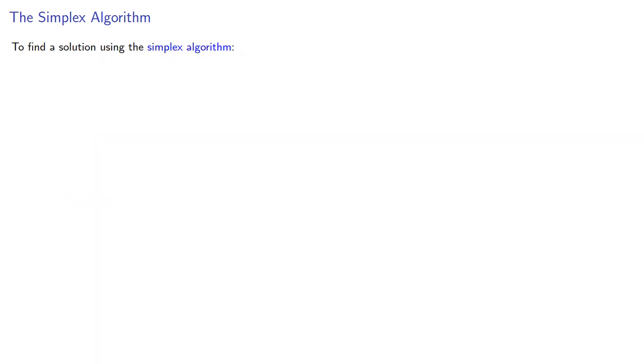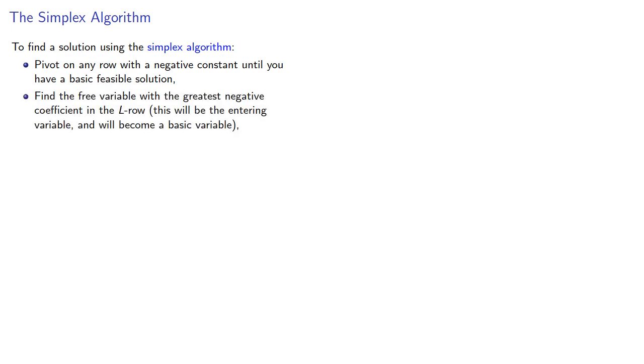Then, to find a solution using the simplex algorithm, we'll pivot on any row with a negative constant until you have a basic feasible solution. Find the free variable with the greatest negative coefficient in the L row. This will be the entering variable and will become a basic variable.